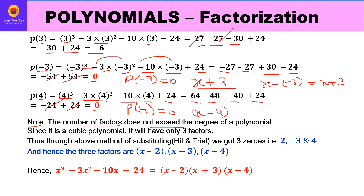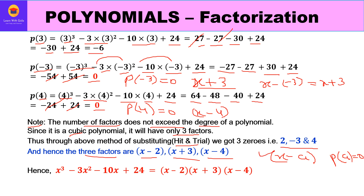Note that the number of factors does not exceed the degree of the polynomial. Since the degree is 3, we get exactly three factors. By hit and trial, the three zeros are 2, -3, and 4. Therefore the factors are (x - 2), (x + 3), and (x - 4). This is the factorization of the cubic polynomial.